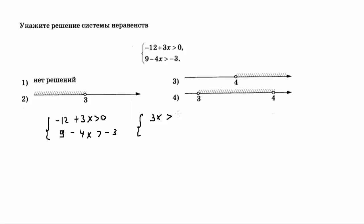Получается: 3x больше 12. Во втором уравнении остаётся минус 4x, потому что 4x идёт со знаком минус. Больше: 9 было с плюсом, при переходе через знак неравенства получается минус 3 минус 9, то есть минус 12. Дальше мы должны избавиться от коэффициентов перед неизвестными — перед иксами.